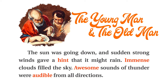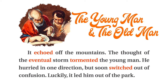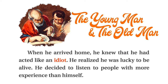The sun was going down, and sudden strong winds gave a hint that it might rain. Immense clouds filled the sky. Awesome sounds of thunder were audible from all directions. It echoed off the mountains. The thought of the eventual storm tormented the young man. He hurried in one direction, but soon switched out of confusion. Luckily, it led him out of the park. When he arrived home, he knew that he had acted like an idiot. He realized he was lucky to be alive. He decided to listen to people with more experience than himself.